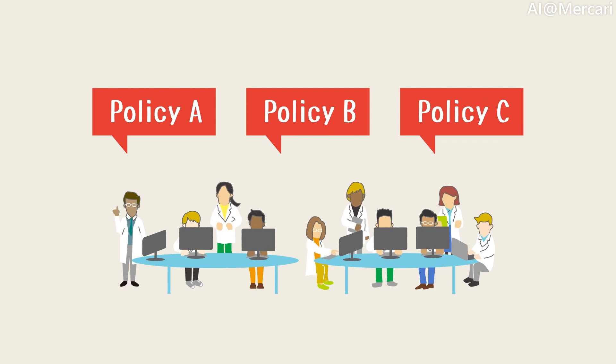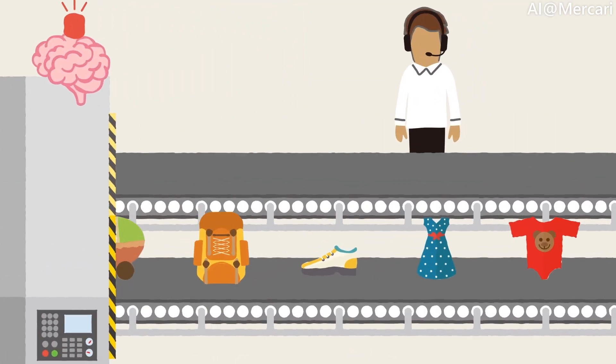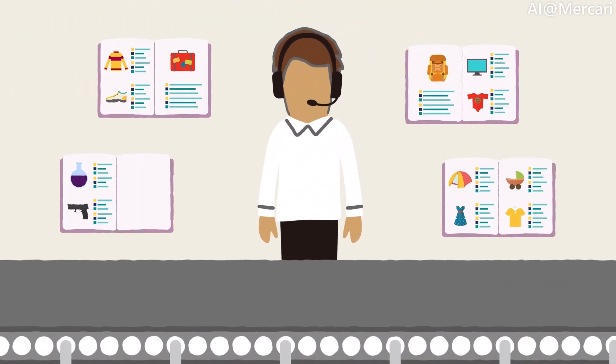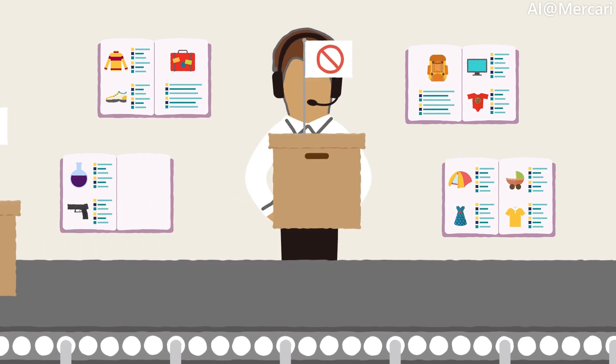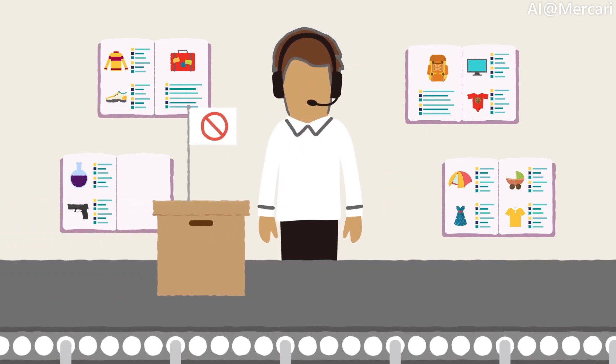We need to consider many different use cases and come up with criteria that are good for each of the policies that we maintain. The other problem is that CS operators have templates, or a manual, to know which listings to flag. The problem is that these templates are always evolving to tackle various new trends in the listings that are submitted to us.